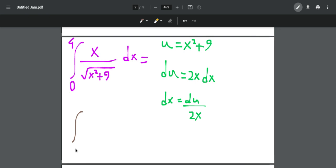For the boundary of 0, when we plug in x to be 0 for u, we get 9. And then, when we plug in 4 for the upper bound, we get 4 squared, 16, plus 9 is 25.